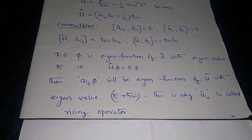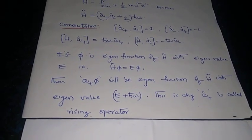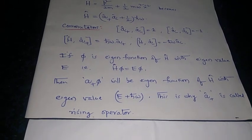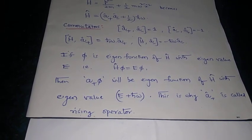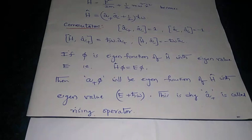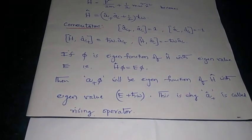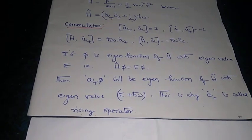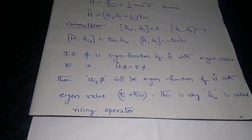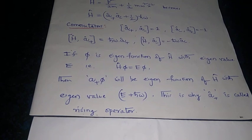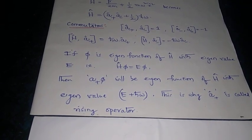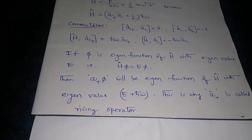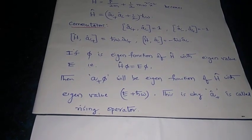If phi is the eigenfunction of H with eigenvalue E, then the eigenvalue of the eigenfunction A plus into phi for H hat will be E plus H bar omega. The action of A plus on phi has raised the energy eigenvalue from E to E plus H bar omega, which is why this A plus operator is called the raising operator.